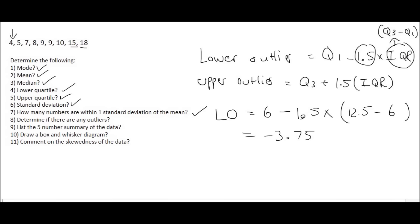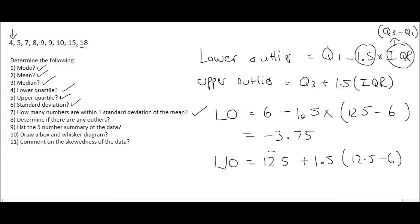For the upper outlier, take Q3 plus 1.5 times the IQR. Q3 is 12.5, so 12.5 plus (1.5 × 6.5) gives 22.25. Any number above that is an outlier. Our highest number is 18, which is below 22.25, so all the numbers are fairly close to each other and none of them are outliers.